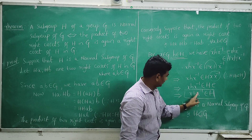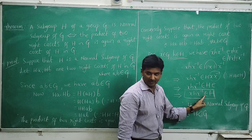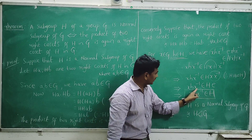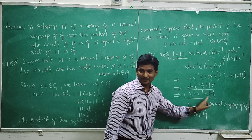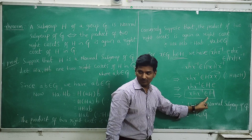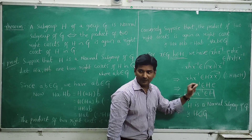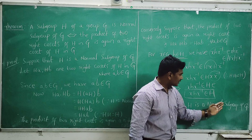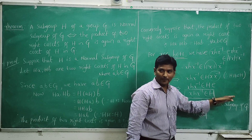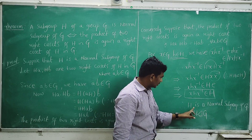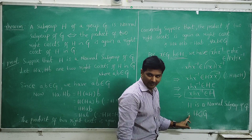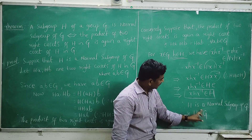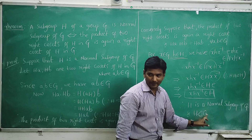Therefore, xhx⁻¹ belongs to capital H. This is the definition of normal subgroup. Therefore, capital H is a normal subgroup of capital G. Hence H is a normal subgroup of G.